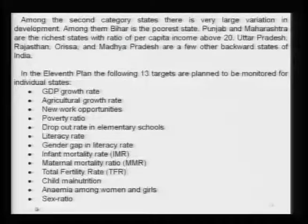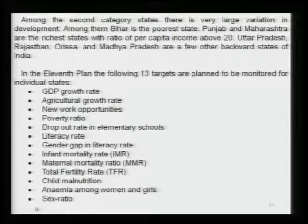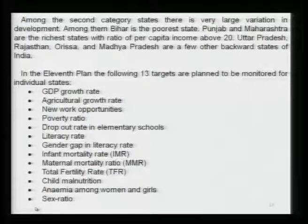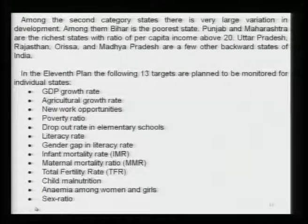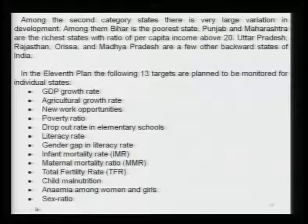In the Eleventh Plan there are thirteen targets. We are trying to go for development with the following indicators: GDP growth rate, agricultural growth rate, new work opportunities, poverty ratio, dropout rate in elementary schools, literacy rate, gender gap in literacy, infant mortality rate, maternal mortality ratio, total fertility rate, child malnutrition, anemia among women and girls, and sex ratio. For monitoring development, these twelve indicators are used. When the Five Year Plan says we want to see India at higher levels of development, it means India must improve in terms of these indicators.